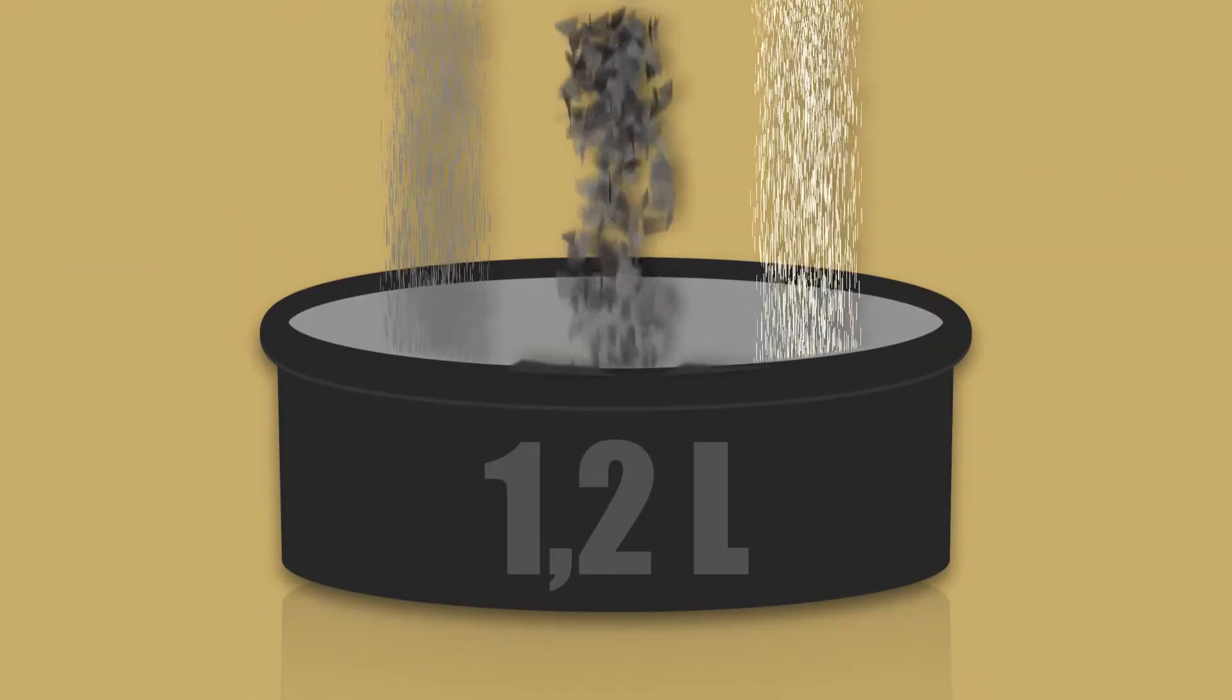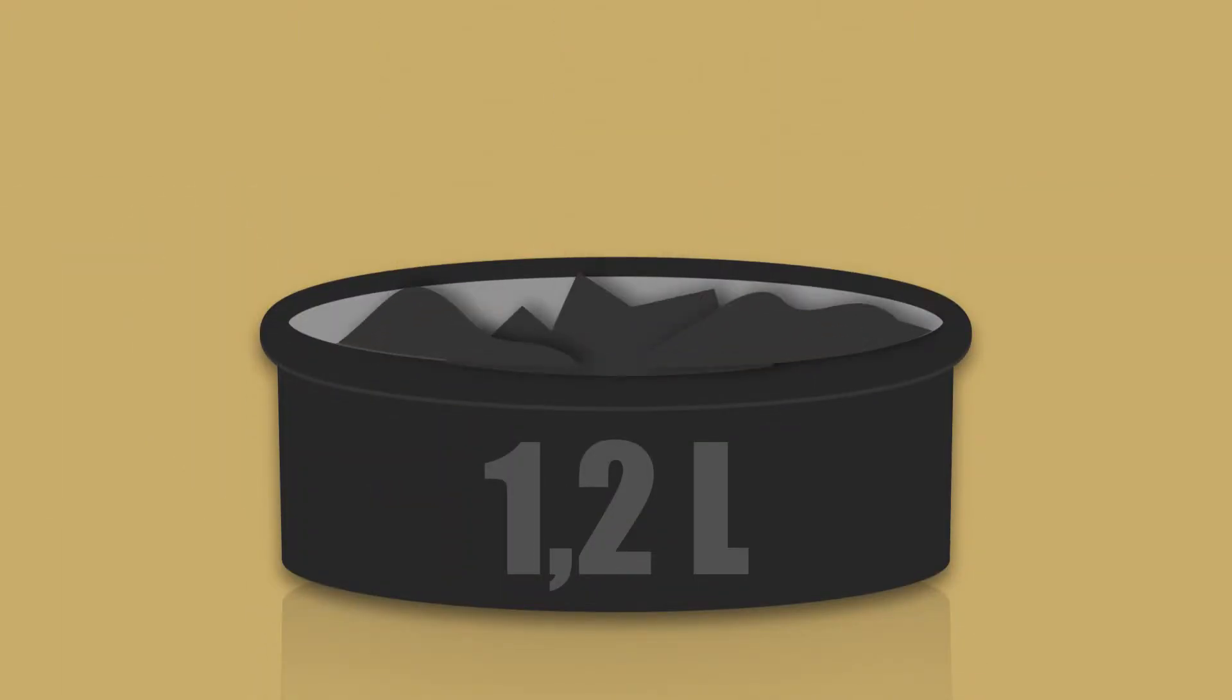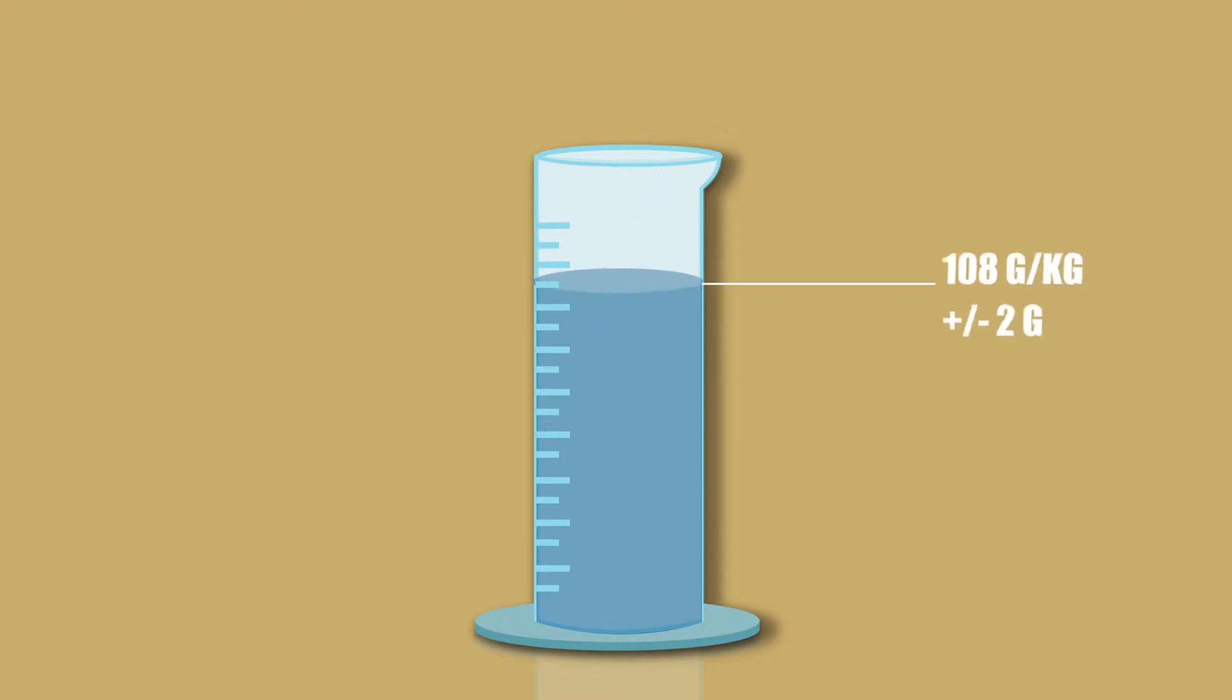Step 1: Pour the desired quantity of concrete powder into a dry container of adequate size, at least 1.2 liters per kilogram of powder. Step 2: Add 108 grams of water per kilogram of dry concrete powder.